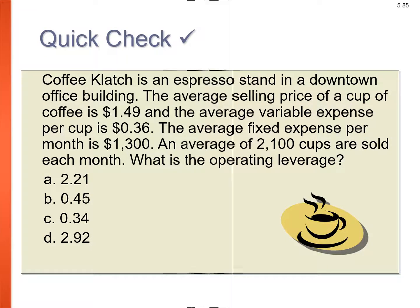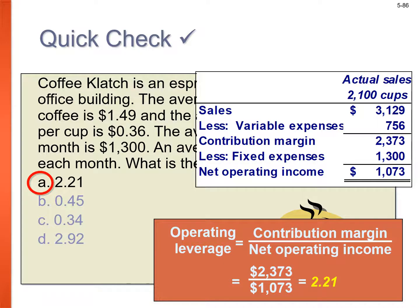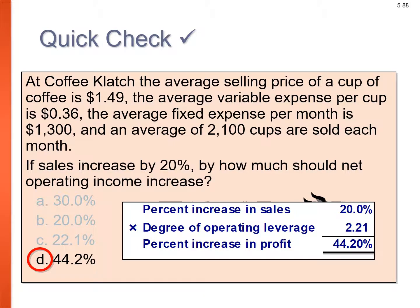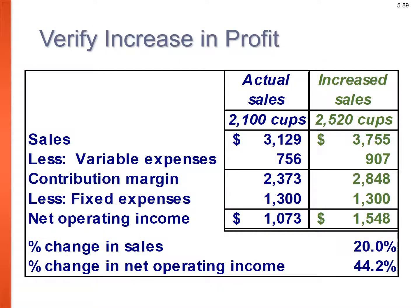For Coffee Clash: actual sales at 3,129 cups; variable expenses $756; fixed expenses $1,300; net operating income $1,073. Contribution margin = 3,129 × $1.13 = $2,373 (approximately). Operating leverage = $2,373 ÷ $1,073 = 2.21. If sales increase by 20%, net operating income increases by 20% × 2.21 = 44.2%.